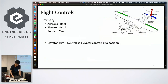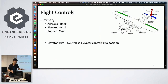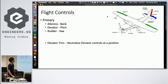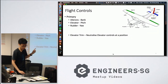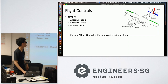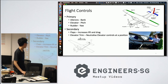Starting with the basics — flight controls. The ailerons are near the edge of the wing and control the bank. The elevator is at the tail and controls the pitch. The rudder controls the yaw. There's also something called the trim — specifically the elevator trim.